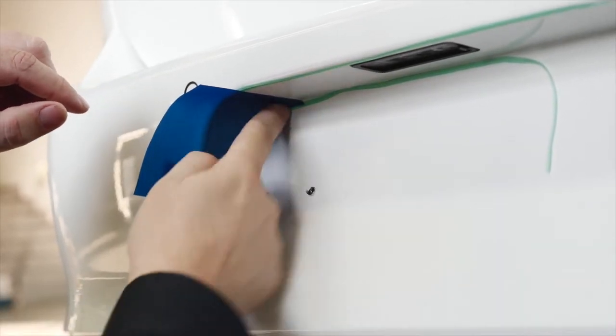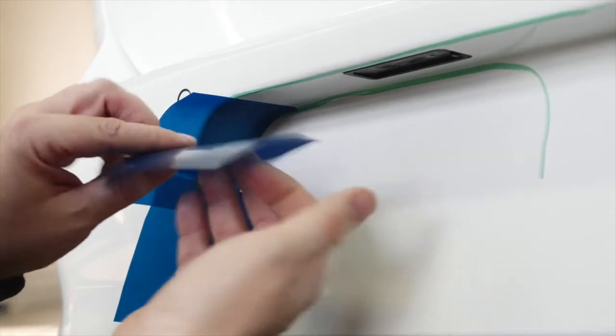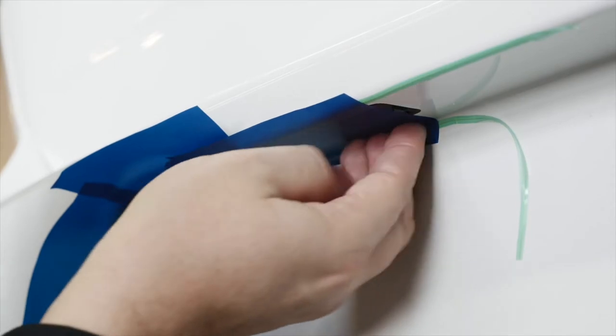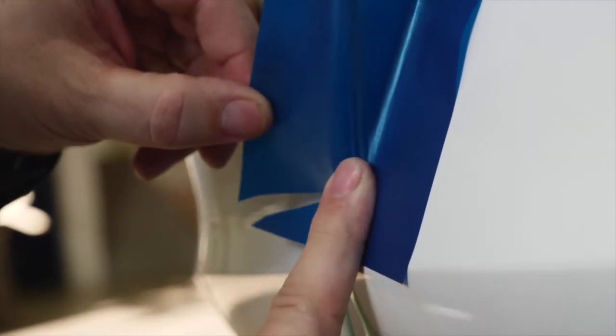Attach appropriately sized wrapped film pieces to the recess in order to form the stencil. Make cuts in the film to remove the tension from the corner.